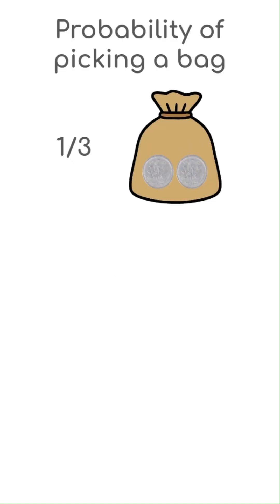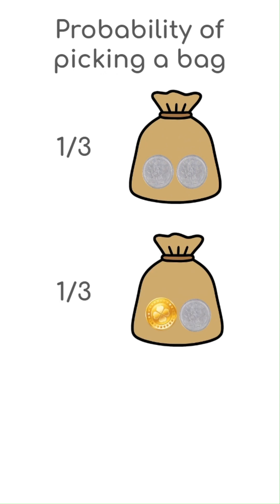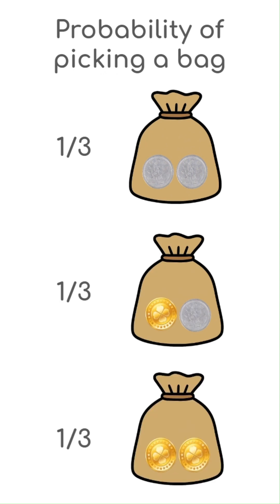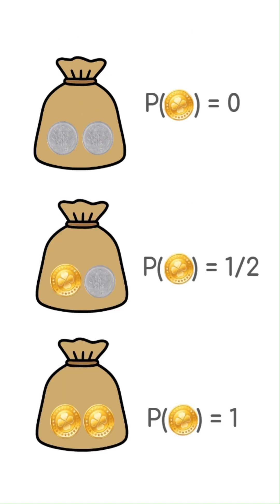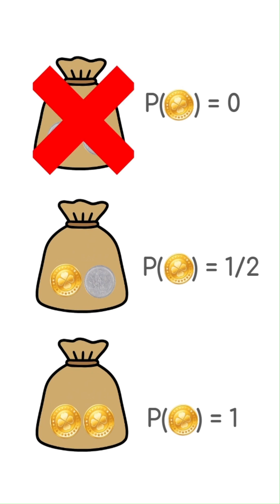Well, clearly the probability of picking the bag with two silver coins, the bag with one gold and one silver coin, and the bag with two gold coins is the same — one-third. Now, the probability of picking a gold coin from these bags is respectively zero, one-half, and one. Since the first coin we picked is gold, we can rule out the bag with two silver coins. So you are left with two options.